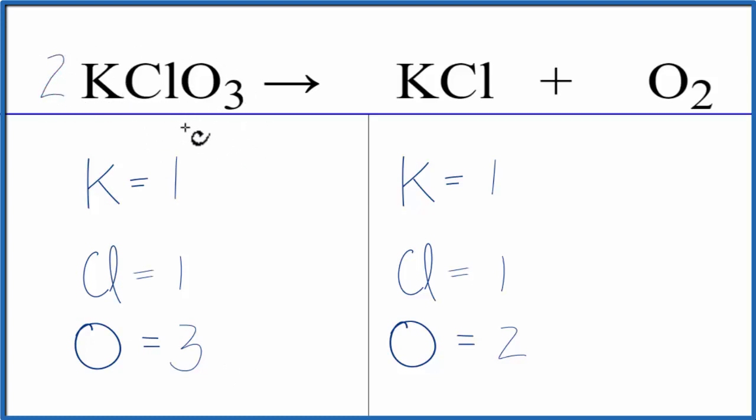So now we need to update all these numbers as two applies to everything. So one times two, that gives us two potassium atoms, one times two, that gives us two chlorine atoms, and then three times two, that gives us six of these oxygen atoms.